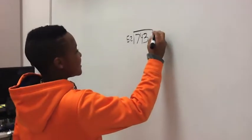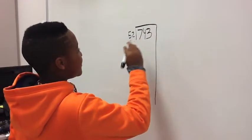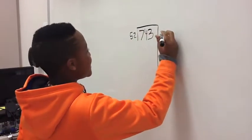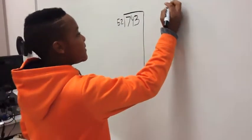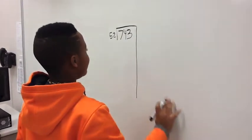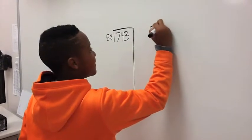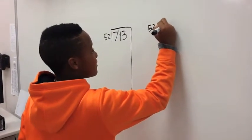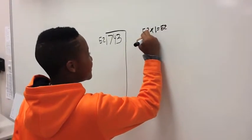Today I'm going to be using the strategy Big 7 to divide 743 divided by 52. First, you can make a graph of multiples of 52. I'm going to have to do some math, like adding.